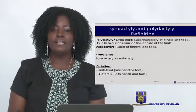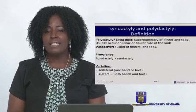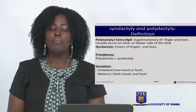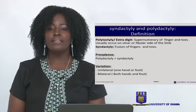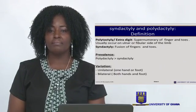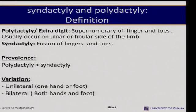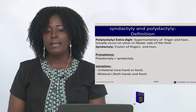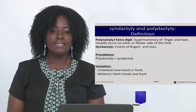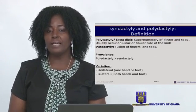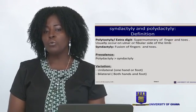By definition, polydactyly — properly called extra digits — is the supernumeracy of fingers or toes, and usually occurs on the ulnar or fibular side of the limb. Syndactyly is the fusion of fingers or toes.